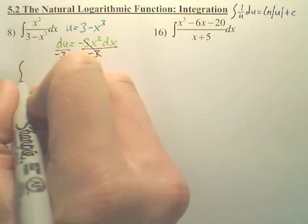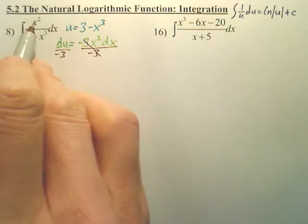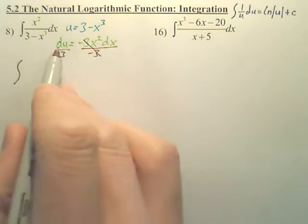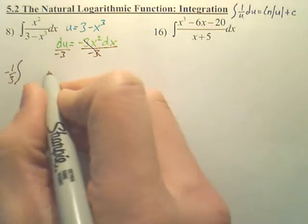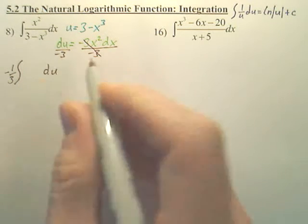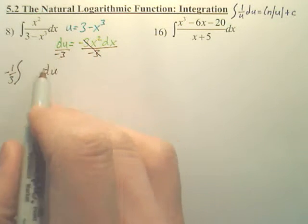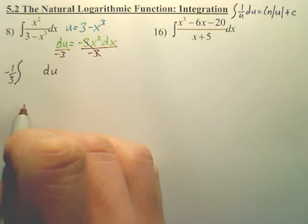My new equation, my new integral, x squared dx is right here, so that would be a negative one-third du, du negative one-third. I threw it out front instead of messing with it.